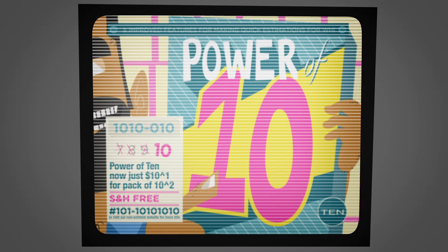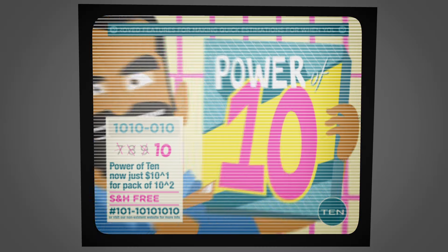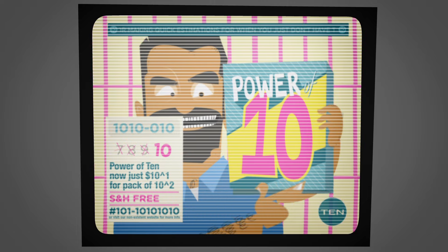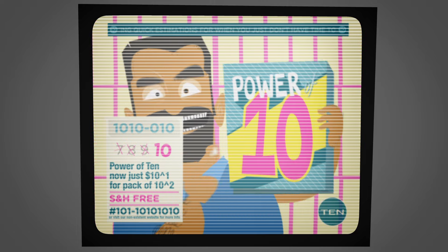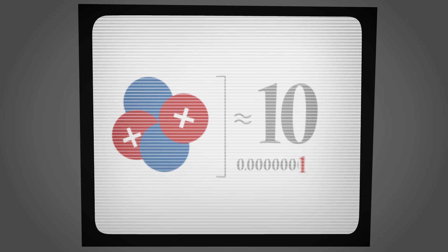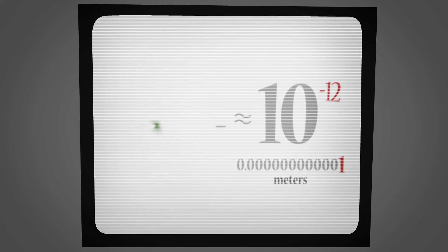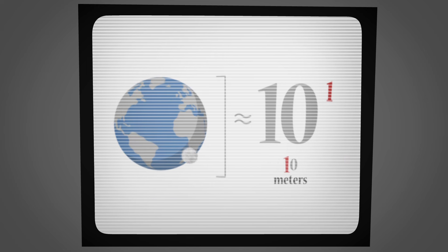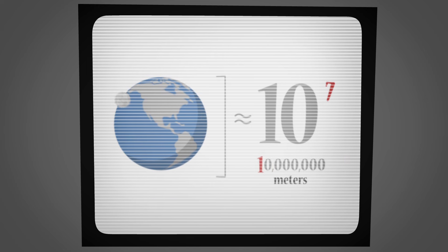We can use the power of 10 as a tool in making quick estimations when we do not need or care for the exact value of a number. For example, the diameter of an atom is approximately 10 to the power of negative 12 meters. The height of a tree is approximately 10 to the power of 1 meters. The diameter of the earth is approximately 10 to the power of 7 meters.